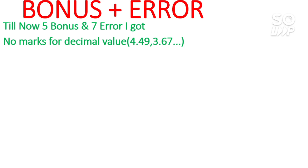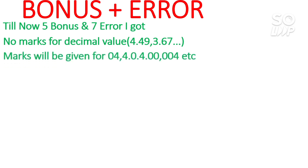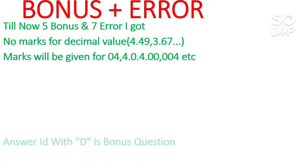Now, no marks for decimal values. If you provided an answer like 4.49, 3.67, or 2.29 in integer type questions, there will be no marks for that, because NTA says you have to give the answer as the nearest integer. However, marks will be given if the right answer is 4 and you write 0.4, 4.00, or 0.004 — all such forms will be accepted.